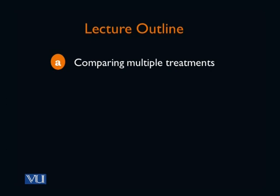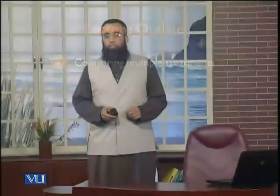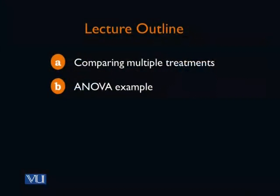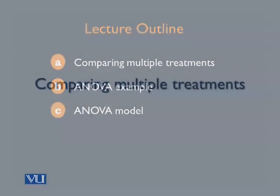We will be seeing that there are different techniques. For two treatments, we have already studied a method which works for two treatments only. We will also see that if we increase to more than two treatments, we need a new technique known as the analysis of variance technique, often shortened to ANOVA, and we are going to discuss that in today's session, initially through an example and then through a model description.